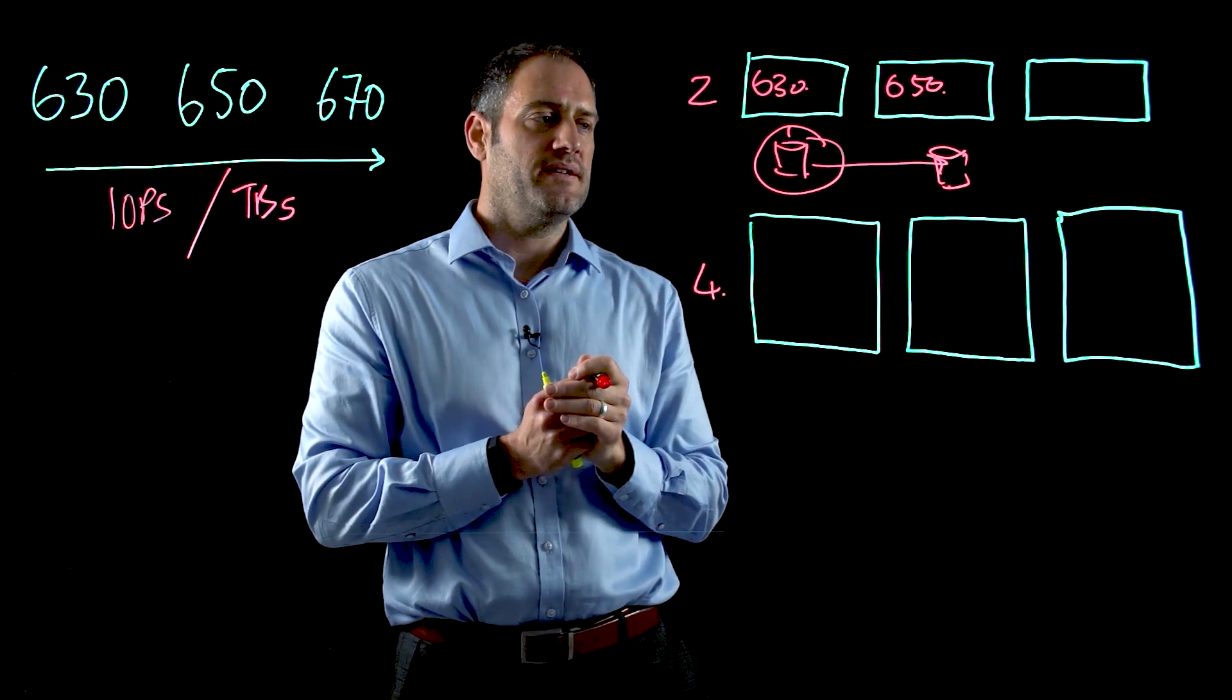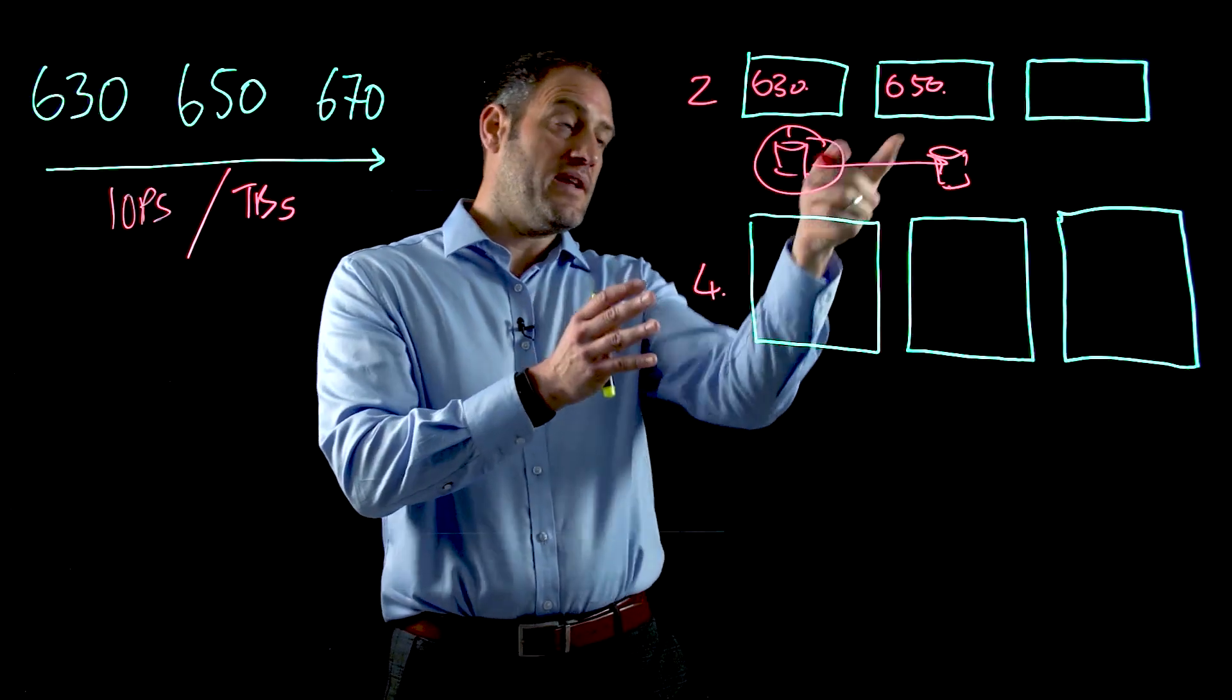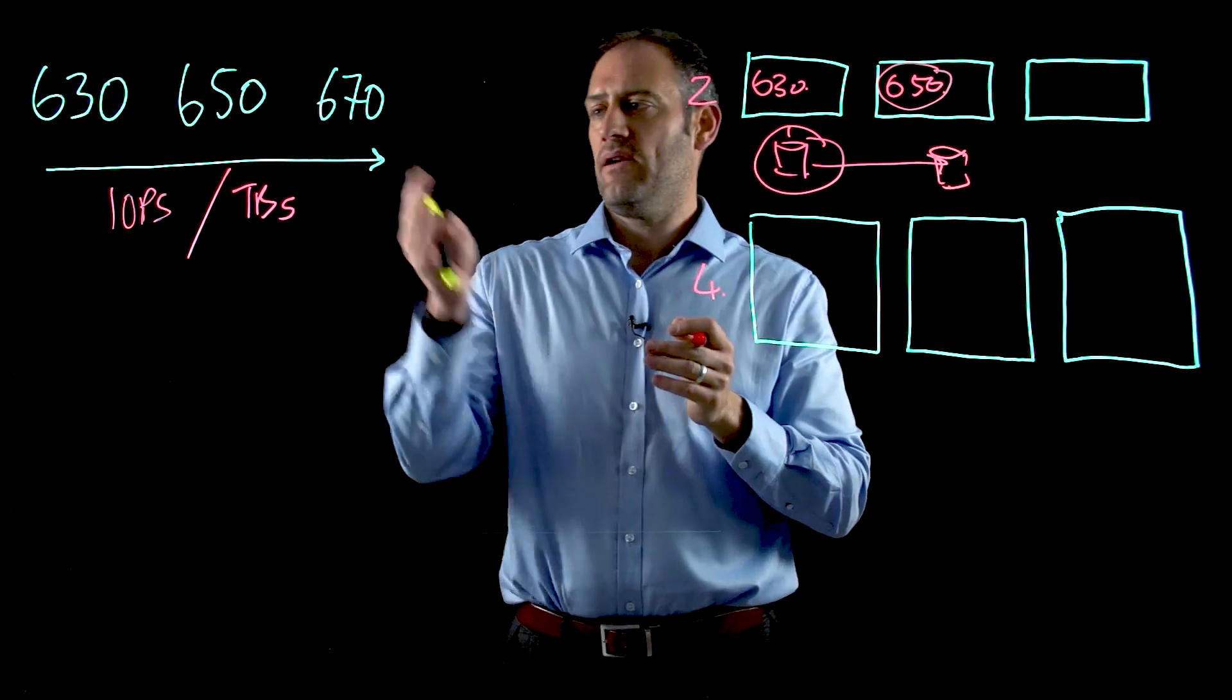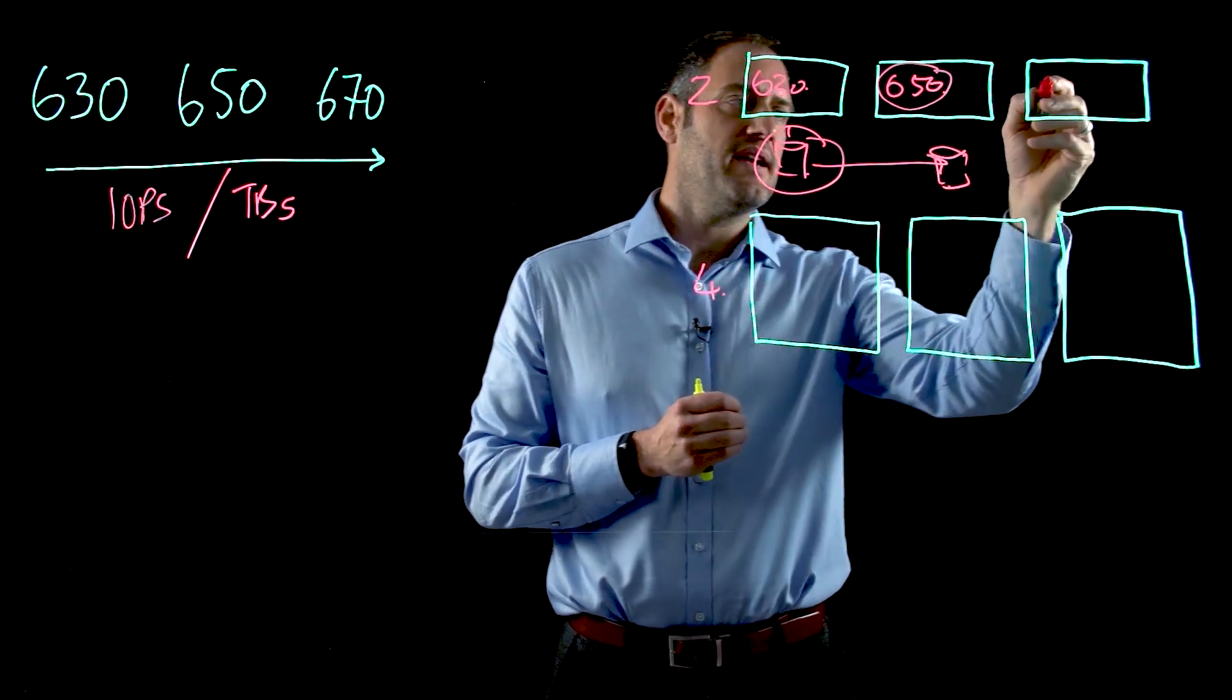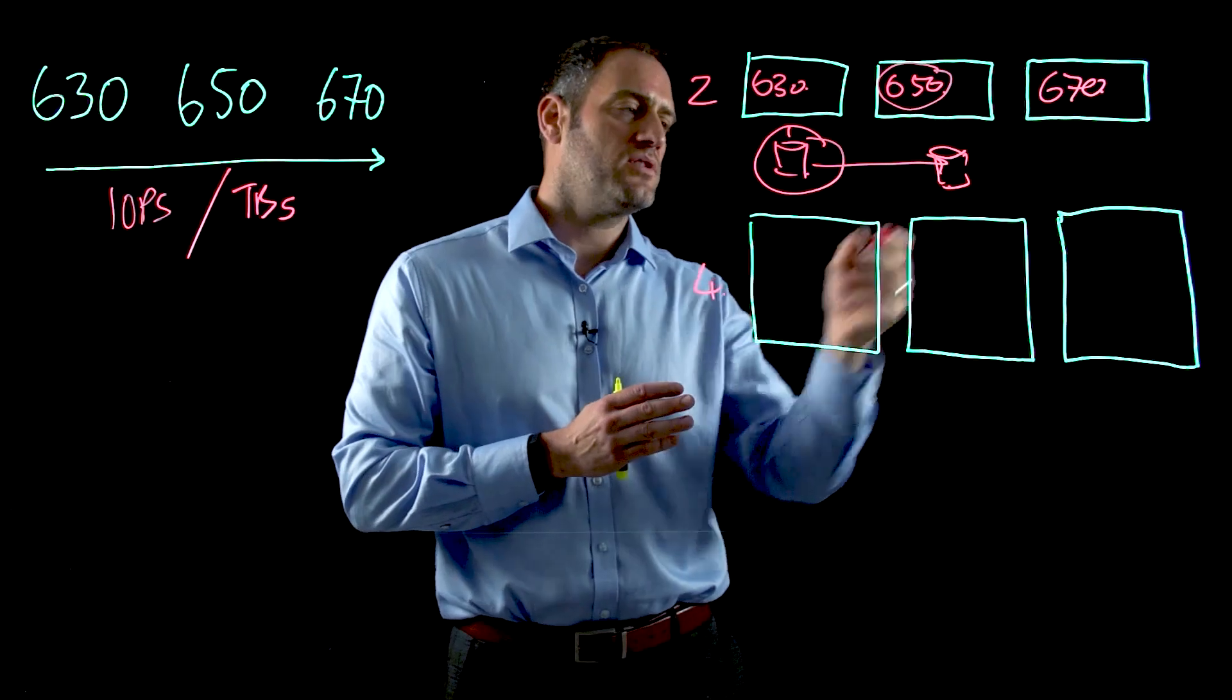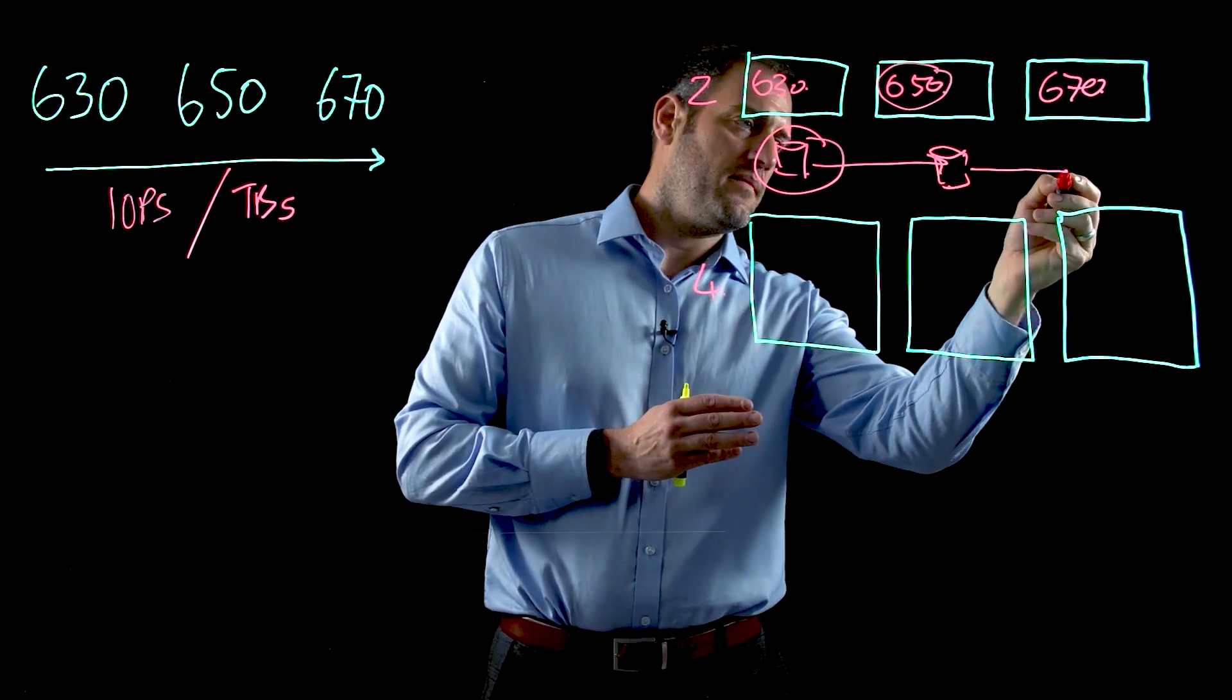Let's say three years on from now the customer is starting to run out of performance again, so we now look at the 670 nodes. Same process: I buy the 670 nodes or I might get them included in the timeless contract, and again my capacity and my media stays the same.